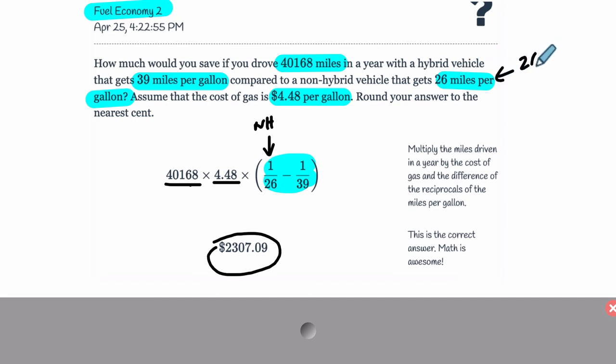And for this one, for the hybrid, it was 39 miles for every one gallon. So the reciprocals are those fractions flipped. So 1 over 26 and then 1 over 39. This is for the hybrid. Subtract them and multiply it by this. You get the same thing always. Why does that connect to our intuitive approach?